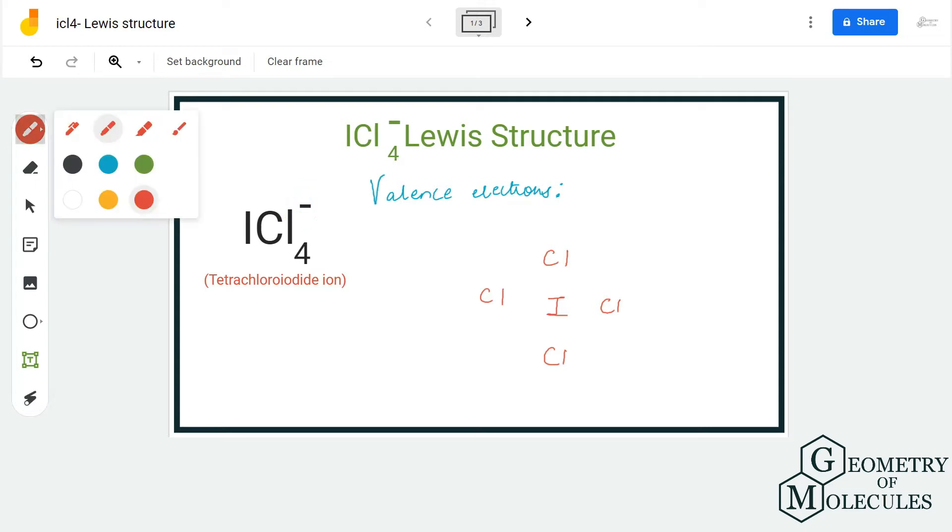To determine its Lewis structure, we are first going to look at the total number of valence electrons for this molecule. Here we have one atom of iodine and four atoms of chlorine. Iodine and chlorine both have seven valence electrons in their outer shell.